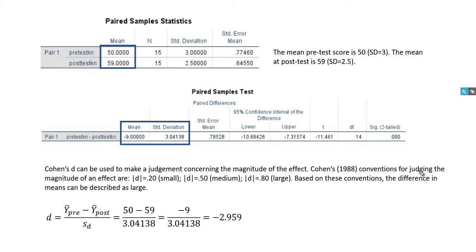Cohen proposed the following conventions for judging the size of an effect when we're comparing our means. A D value, an absolute value of D equal to 0.20, would indicate a small effect size. D equal to 0.50 would indicate a medium effect size, and then a D value that's equal to 0.80 would indicate a large effect size.